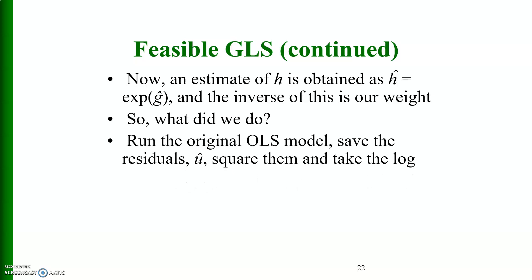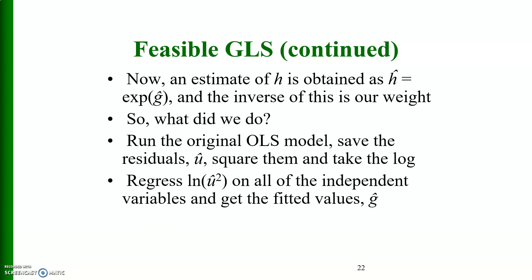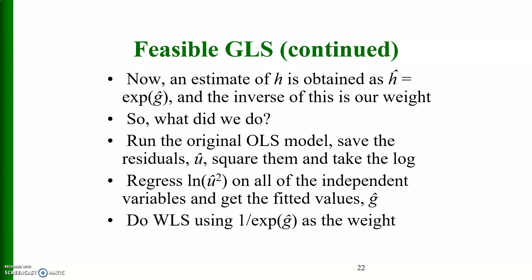To summarize the feasible GLS procedure: run the original OLS model, save the residuals u-hat, square them, and take the natural log. Regress the natural log of u-hat squared on all of the independent variables and get the fitted values g-hat. Then do weighted least squares using 1 divided by exp(g-hat) as the weight.